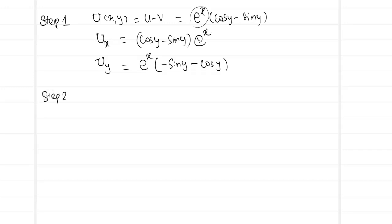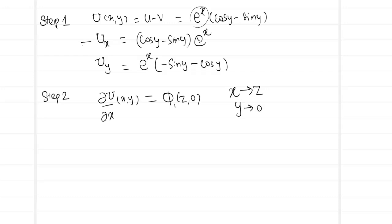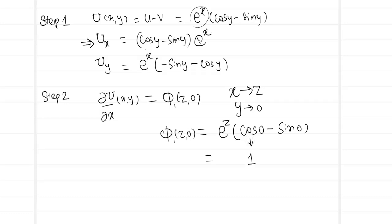Step 2: replace x with z and y with 0 in U_x to form phi1(z,0). So phi1(z,0) = e^z(cos 0 - sin 0) = e^z(1 - 0) = e^z.